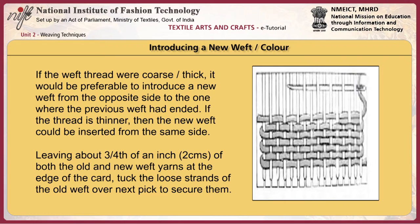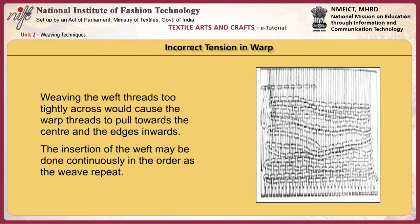If the weft thread is coarse or thick, it would be preferable to introduce a new weft from the opposite side to the one where the previous weft had ended. If the thread is thinner, the new weft could be inserted from the same side. Leaving about three-quarters of an inch of both the old and new weft yarns at the edge of the card, tuck loose strands of the old weft over the next pick to secure them. Weaving the weft threads too tightly across would cause the warp threads to pull toward the center and the edges inwards. The insertion of the weft may be done continuously in order as the weave repeats.